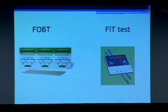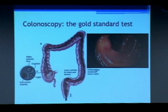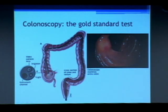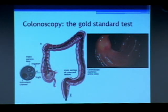The most common stool test is called the fecal occult blood test, which looks for blood. The newer FIT test looks for some genetic mutations and is supposed to be better. With a colonoscopy, our goal is to go through the rectum, into the sigmoid colon, descending colon, transverse colon, ascending colon, and then to the cecum — where your small intestines connect to the large intestines. The scope has an instrument channel to cut and remove polyps, a video camera, a light source, and an irrigation area to clean the colon.